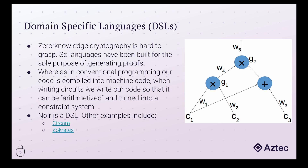It's worth noting that this is a very surface-level overview of how constraint systems work, and we'll have documentation linked below. Without the advent of domain-specific languages, we really wouldn't have the proliferation and innovation we've seen with zero-knowledge proofs. As mentioned, Noir is a DSL, but other examples include Circom — short for Circuit Compiler — and also ZoKrates, among many others.